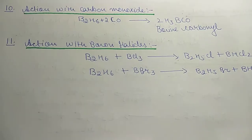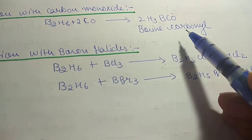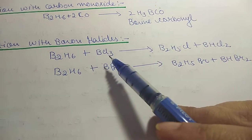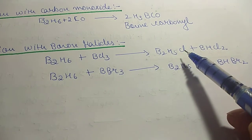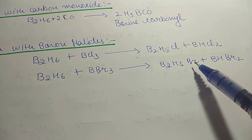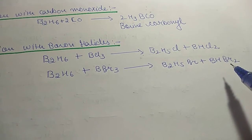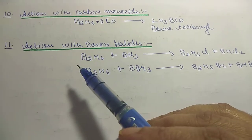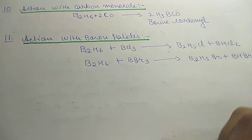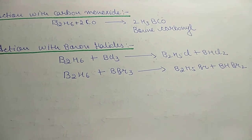Action with carbon monoxide: B2H6 reacts with CO to give borine carbonyl, H3BCO. Action with boron halides: it reacts with BCl3 to give chlorodiborane and BHCl2; it reacts with BBr3 to give bromodiborane and BHBr2. These are the main reactions of diborane. There are other reactions which will be continued in the next lecture.